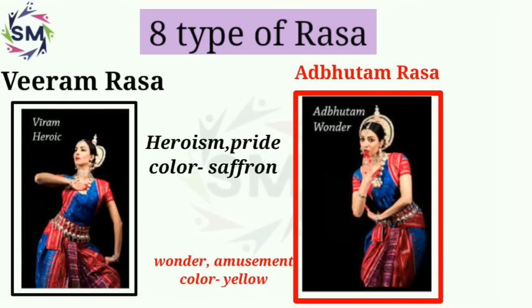And the eighth Rasa is Adbhuta Rasa — it shows wonder, mystery, and curiosity. Its color is yellow and its god is Brahma. Like there is a turning point in a work — it was being shown that a person was a beggar roaming here and there, but suddenly a turning point came and we found out that he is not a beggar, he is a king. So suddenly a wonder arose.